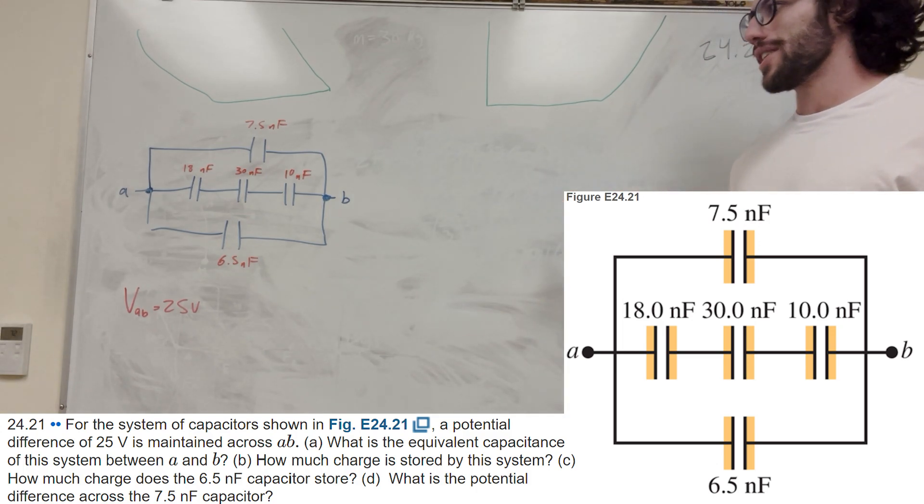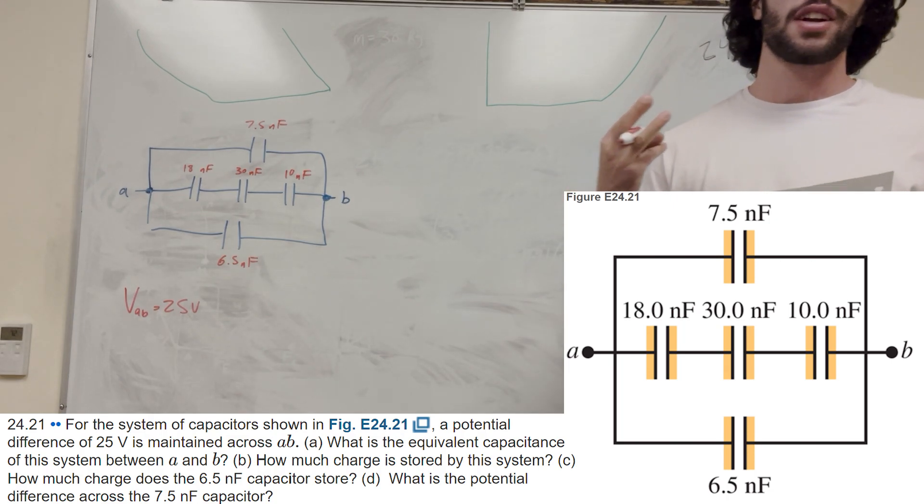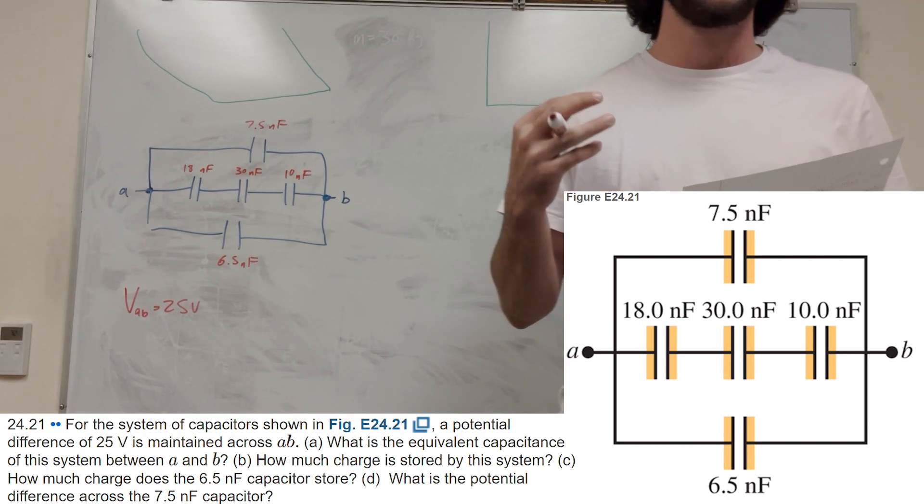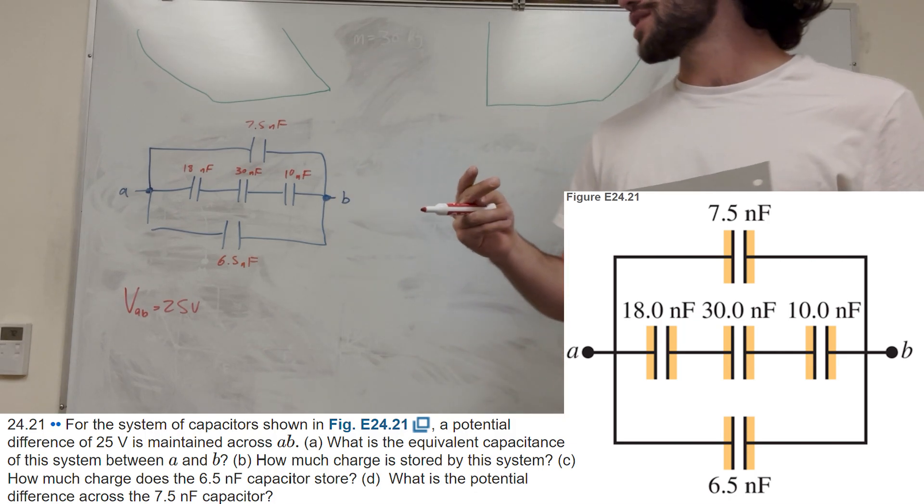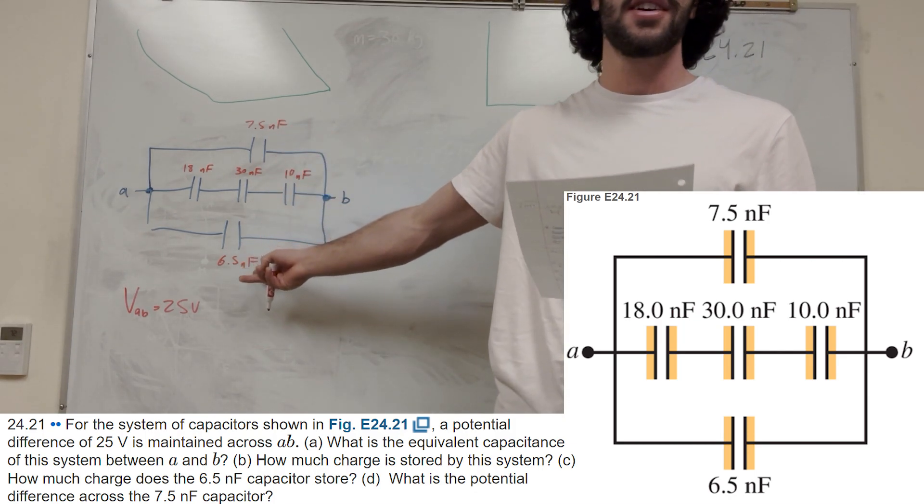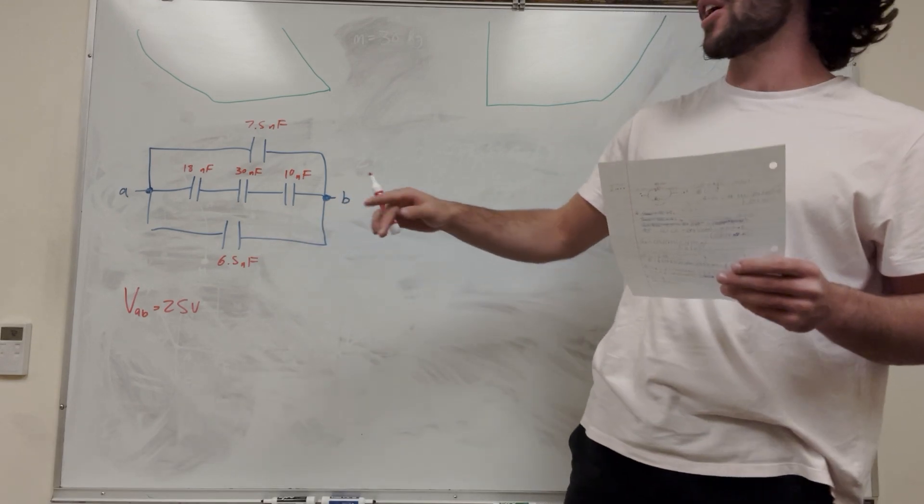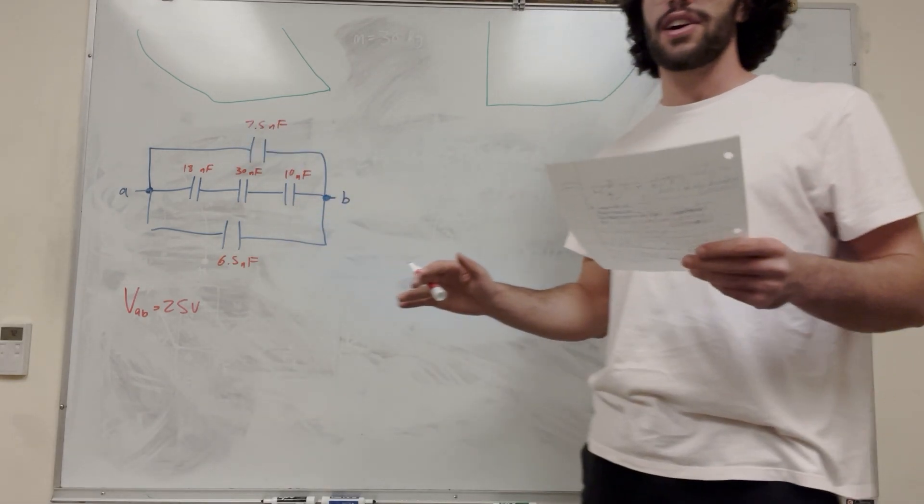What's up Cal gang? Alright, so we got this problem here. We have all these capacitors and we have three parts to it. So it wants us to find the equivalent capacitance of the system, it wants us to find how much charge is stored, how much charge is there in this capacitor down here, and then what's the potential difference across this capacitor. So let's go ahead and do all of that.